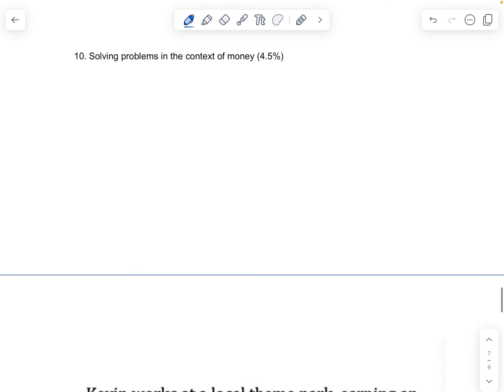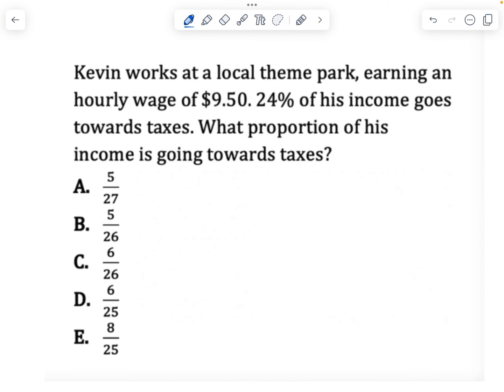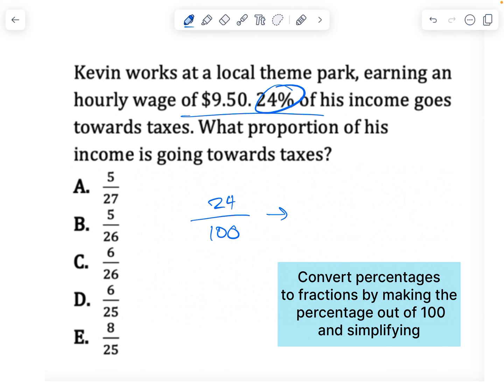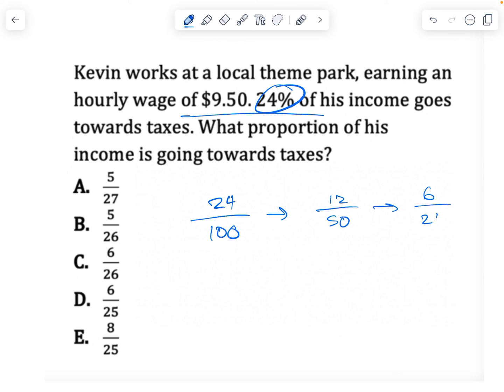We're almost done. Solving problems in the context of money, very common as well. Kevin works at a local theme park earning an hourly wage of this. 24% of his income goes towards taxes. What proportion of his income is going towards taxes? It's literally asking you to convert 24% to a proportion or a fraction. As you can see here, some calculators might be able to do this for you. What I would just say is do 24 divided by 100 and try to simplify that down. So I know it's divisible by two on both top and bottom. So 12 over 50, still divisible by two. I can get that to 6 over 25. And that's my answer. What you could do on the other side is just divide each of these and find the decimal equivalent. You'll find that this is equal to 0.24, and that corresponds to 24%.